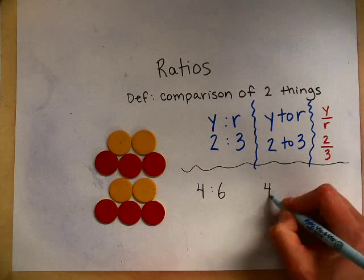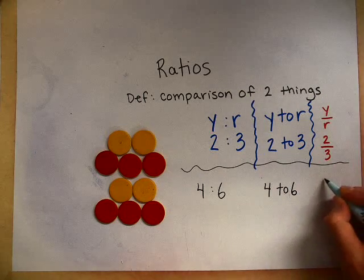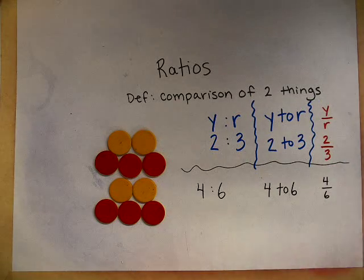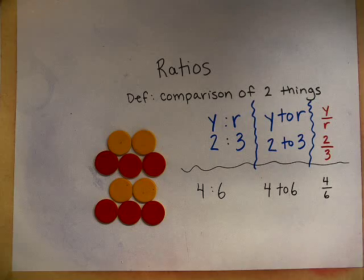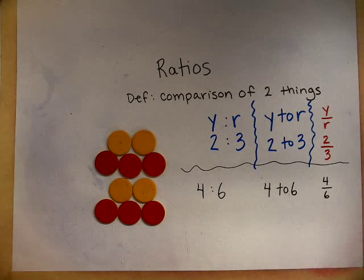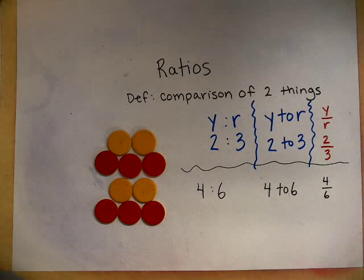So four to six, four to six, and four to six. These are equivalent ratios, very much like equivalent fractions.